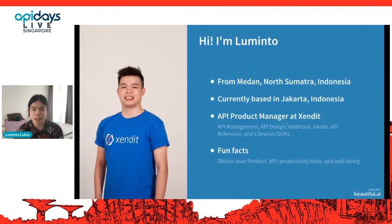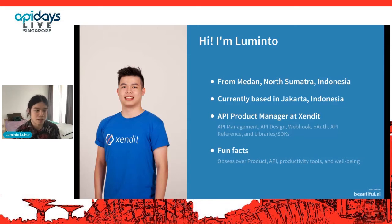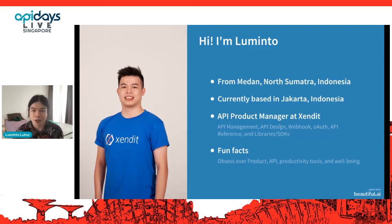I'm Luminto, from Medan, North Sumatra, Indonesia, currently working from home in Jakarta. I'm currently working as API Product Manager at Xendit, where I help prioritize business requirements and manage the scope of the API team — which includes API management, API design, webhook, OAuth, API reference, and libraries and SDKs to provide great developer experience to our customers. I'm obsessed with product, building product, API productivity tools, and also well-being like meditation.